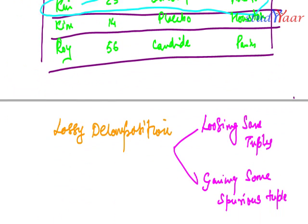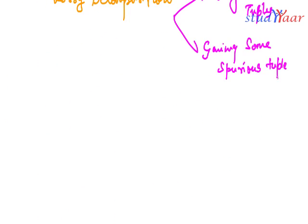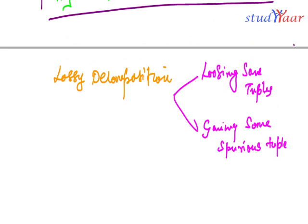So we have covered what were the indicators of bad design and reasons for normalization: update anomalies, having null values, having redundant data, and having spurious tuples or lossy decomposition.